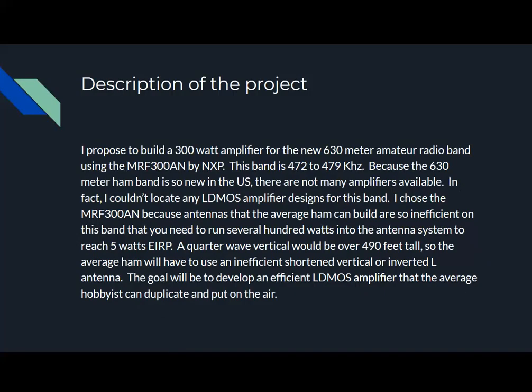Here's the description of the project. I built a 300-watt amplifier for 630 meters using the MRF300AN. Because antennas are very inefficient on that band, I chose the MRF300AN because it would have 300 watts of power and that power may be needed to load the inefficient verticals.